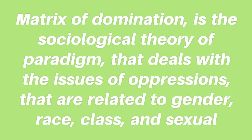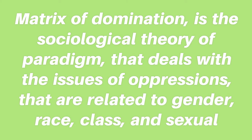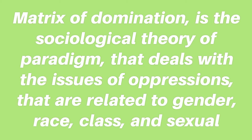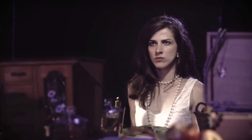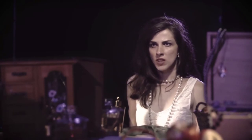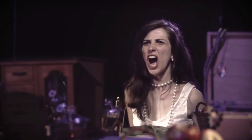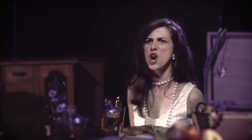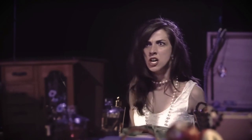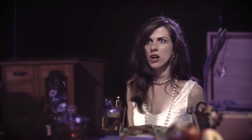Matrix of domination is a sociological theory or paradigm that deals with issues of oppression related to gender, race, class, and sexual orientation, which was introduced by Patricia Hill Collins. Collins argues that there are many additive models of oppression prevalent in the dichotomous thinking of racial, Eurocentric, and masculinist thoughts of people who claim to have a superior gender, race, or ethnicity. It is necessary to identify the matrix of domination so that oppressed and ostracized people get a chance to grow with society and contribute to its development.